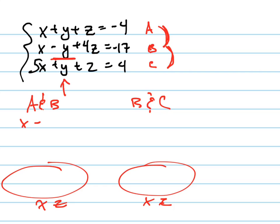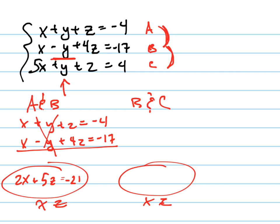Here's A, X plus Y plus Z equals negative 4. Here's B, X minus Y plus 4Z equals negative 17. Notice when I add them straight down, the Y's are going to be eliminated. I get 2X plus 5Z equals negative 21. Let's check if I did that right. Yep.